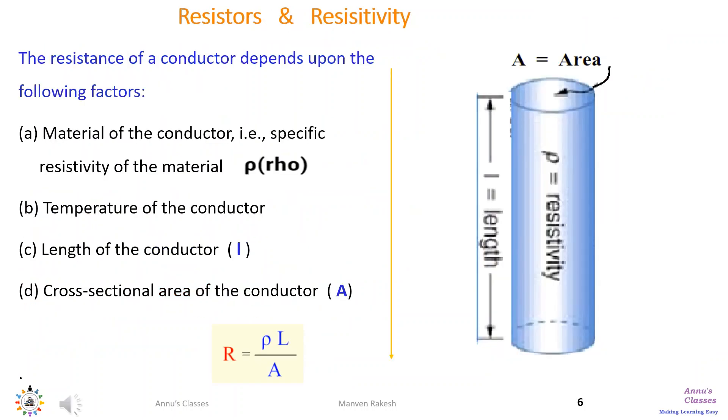The resistance of conductor depends on four factors. First, material of the conductor. Every material has a specific resistivity which is denoted by rho, temperature of the conductor, length of the conductor L, and cross-sectional area of the conductor A.